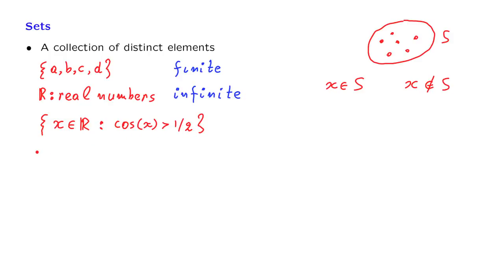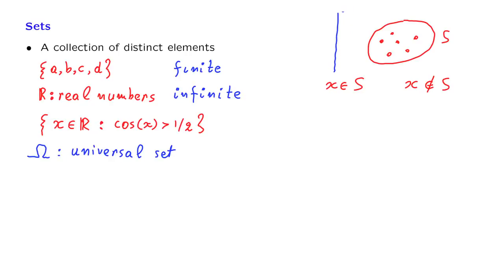One set of particular interest is the following. Sometimes, in some context, we want to fix a collection of all possible objects that we might ever want to consider. That collection will be a set. We denote it usually by omega, and we call it the universal set. Having fixed a universal set, we will only consider smaller sets that lie inside that big universal set.